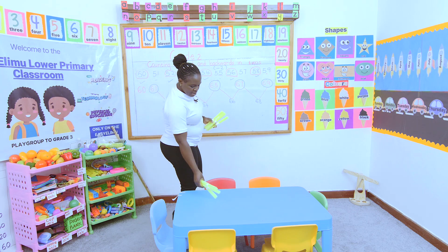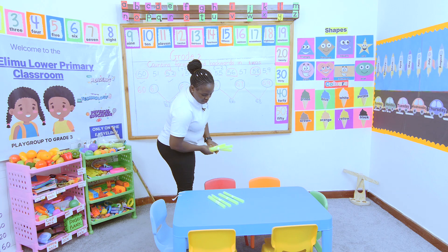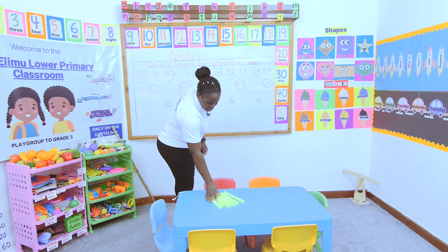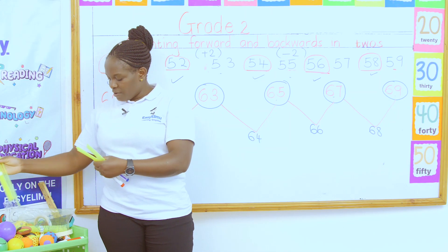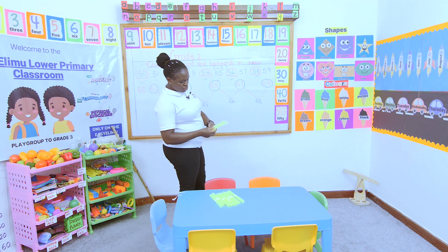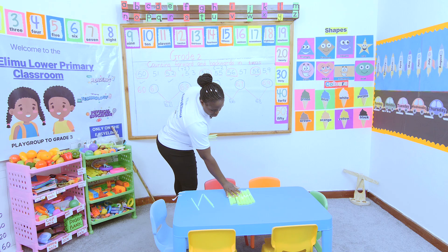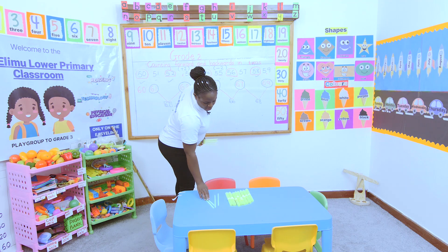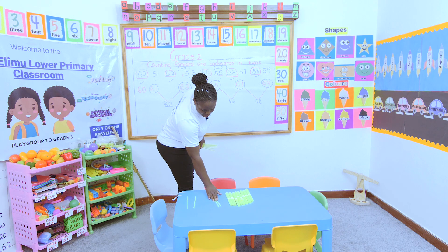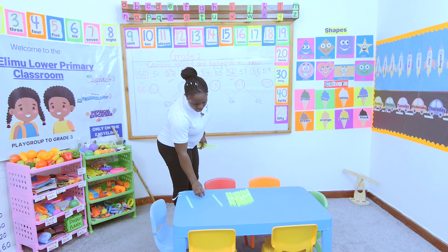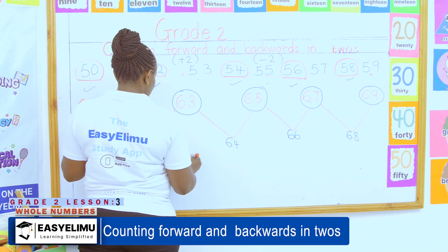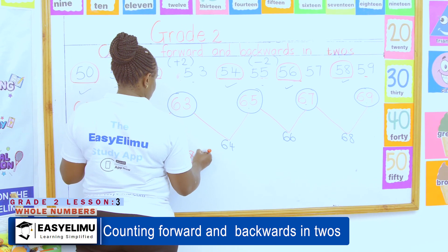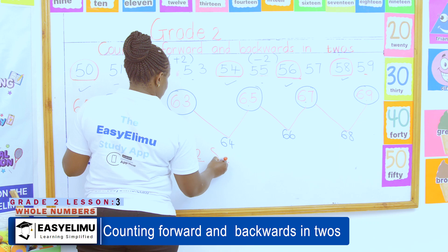So we are saying: count backwards in twos from 84. If I'm having this — 1, 2, 3, 4, 5, 6, 7, 8 bundles of sticks. These are 8 bundles of sticks. And now the remaining ones are supposed to be 4: 1, 2, 3, 4. So I'm supposed to count from 84 to the missing number, reducing these numbers in twos. It was 84. When I take away 2, it will be 82. When I take away another 2, it remains 80.